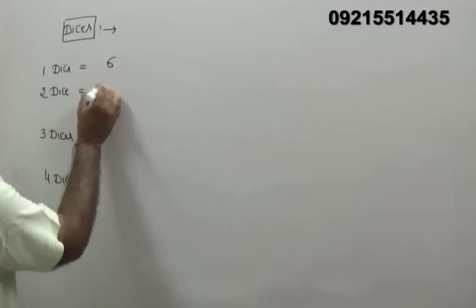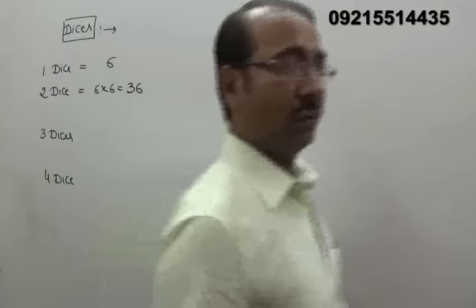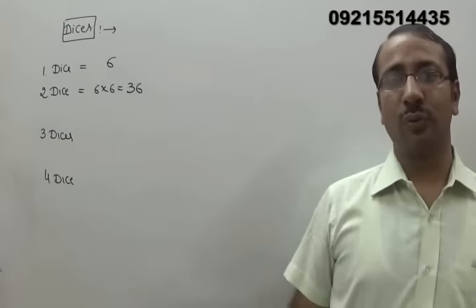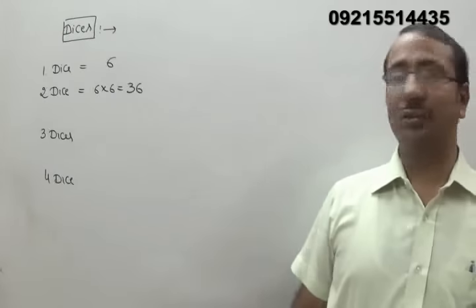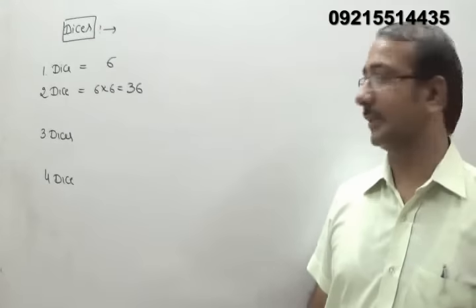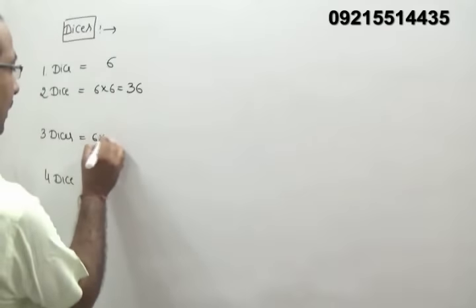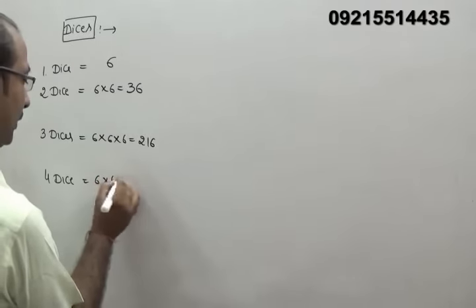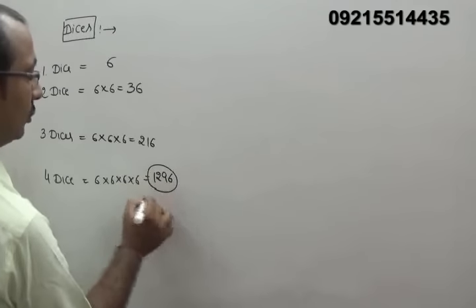When 2 dice are thrown, the 36 outcomes come from pairs like (1,1), (1,2), (1,3) ... (1,6), then (2,1) up to (2,6), then (3,1) up to (3,6), and so on — giving 36 total outcomes. For 3 dice: 216 outcomes. For 4 dice: 1296 outcomes.